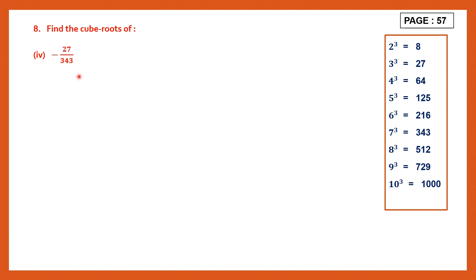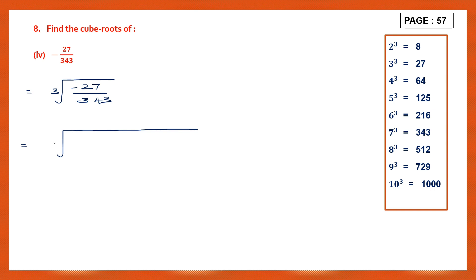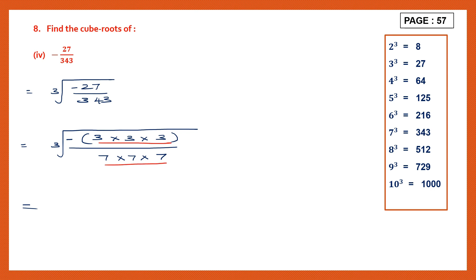The fourth one is minus 27 by 343. So let's find the cube root of that — that will be minus 27 by 343. Now let's look at the table. In the table, 27 the cube root is 3 and 343 the cube root is 7. So let's write that: cube root of minus 27, so minus — now 27 will be 3 into 3 into 3, and in the denominator we have 7 into 7 into 7. Now we have the triplet ready — we have 3 as one triplet and 7 as the other triplet. So when we remove this root sign it is minus 3 by 7, and this is our answer.